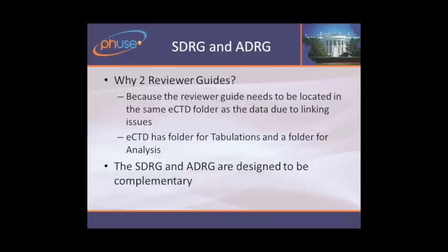We get the question quite a bit: why are there two reviewer's guides? The reason is that the reviewer guide needs to be located in the same eCTD folder as the data, because there may be linking between the reviewer guide and the define file or the data. Given that we have two folders — one for tabulation and one for analysis — we therefore have two reviewer guides. Given that these two work streams were back to back and some folks were on both teams, there's quite a nice harmonization between the two guides, and they're designed to be complementary and used together.